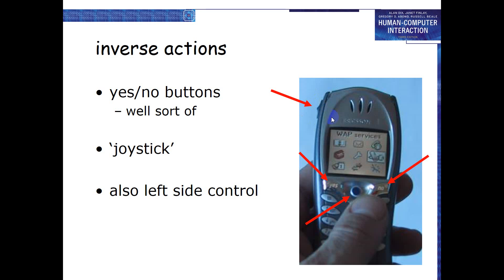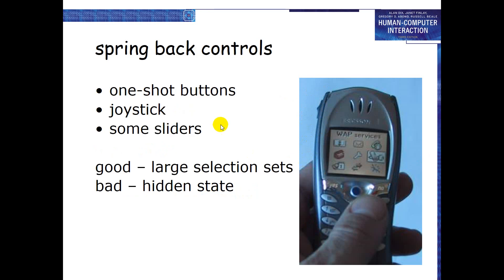Similarly for volume buttons — pressing the upper button increases volume, pressing the lower button decreases it; these are inverse actions. Spring back controls are controls that return to their original state when released. Simple electricity buttons are not spring back — when pressed, they stay pressed until you go back and release them. A spring back control, like a mouse click, returns to its state on its own.